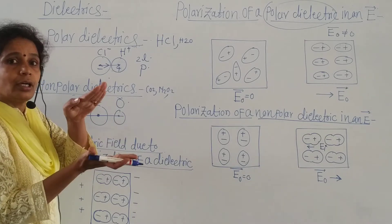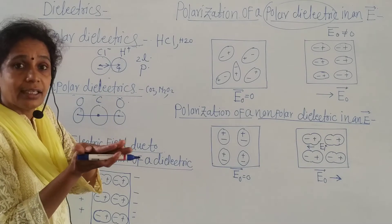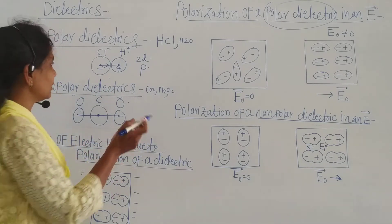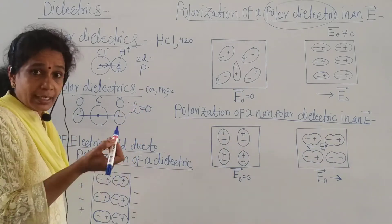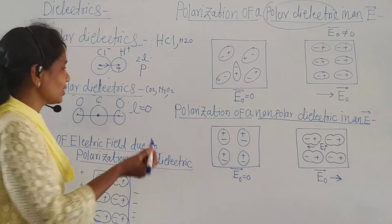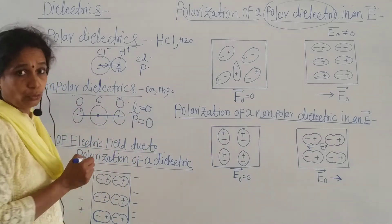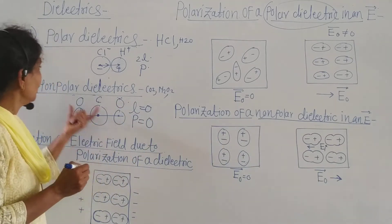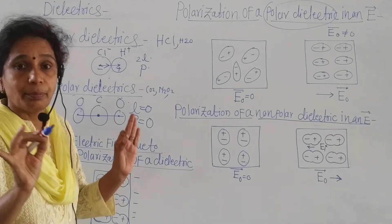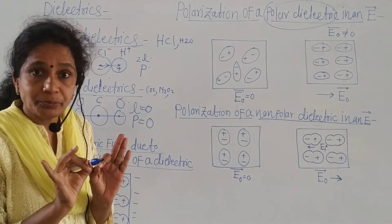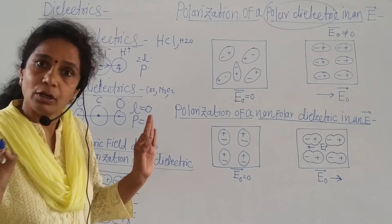Because the positive charge and the negative charge coincide, the pole length is zero and therefore P is equal to zero. Thus, this non-polar dielectric does not possess any dipole moment.